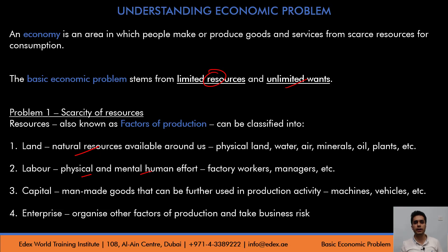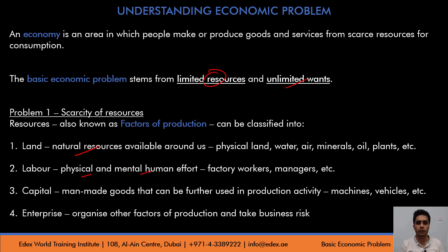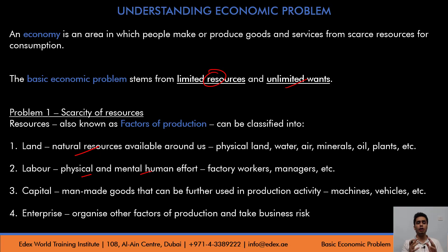The fourth category is enterprise. Enterprise involves organizing other factors of production — land, labor, and capital — and taking business risk to produce goods and services. The entrepreneur decides the mix of factors of production: more of land and labor with less of capital, or entirely using capital without any labor. That decision is taken by the entrepreneur, which is enterprise. There's also a business risk involved — the goods the entrepreneur produces may not be sold, and that risk is entirely taken by the entrepreneur. These four factors of production are scarce or limited in nature — that's the first part of our basic economic problem.